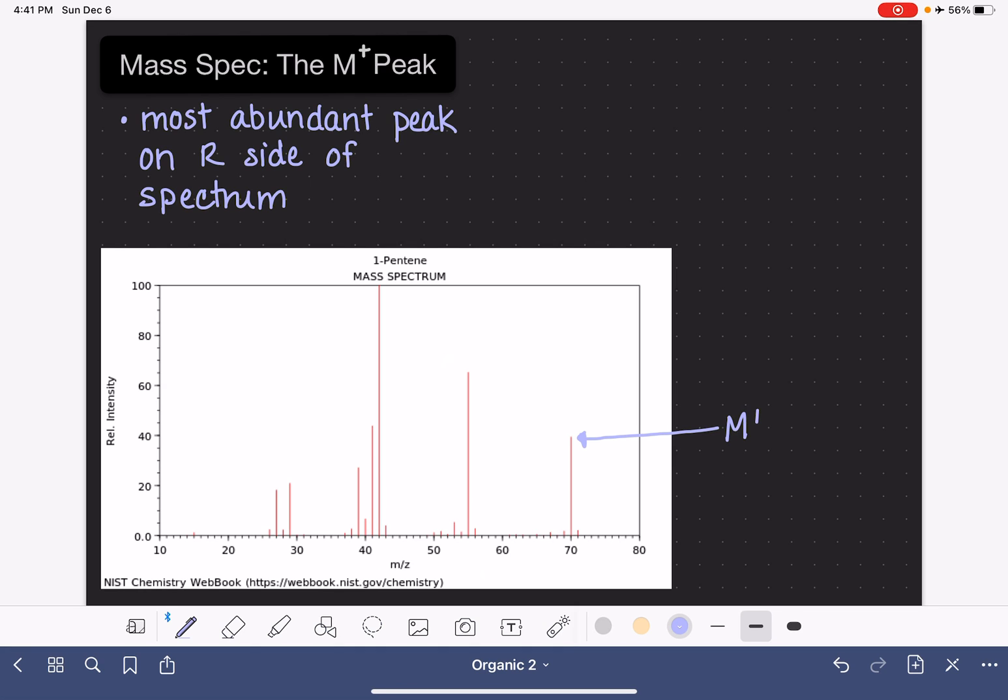This would be our M plus peak, and we can see that it corresponds to the number 70. This is the mass of the fragment or the portion of the molecule that's giving rise to this particular peak.